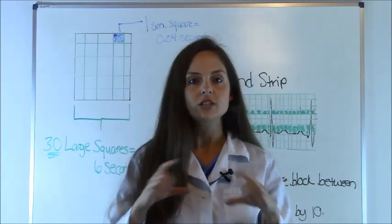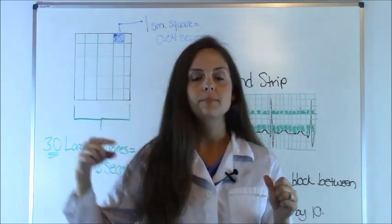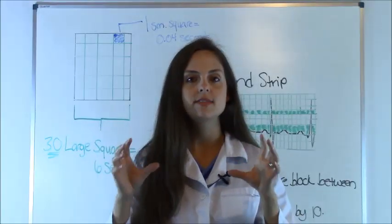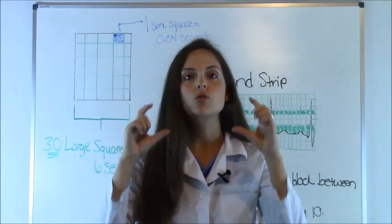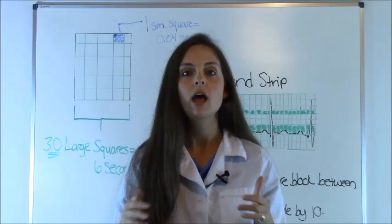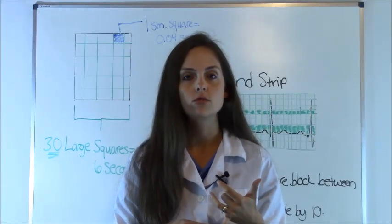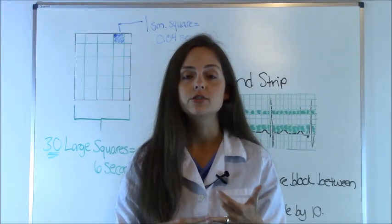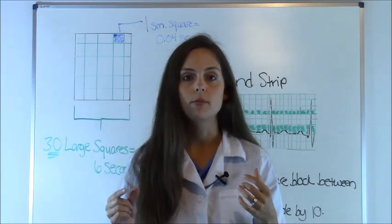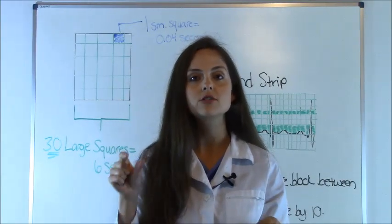Now on an EKG strip, you have your rhythm, which are those squiggly lines and the QRS complex, and then behind that are little squares. Sometimes they're really hard to see, but they're very important whenever you're using the 6 second rule trying to count your atrial and ventricular rates or you're counting your PR intervals or your QRS complex. They're very important because they measure time.